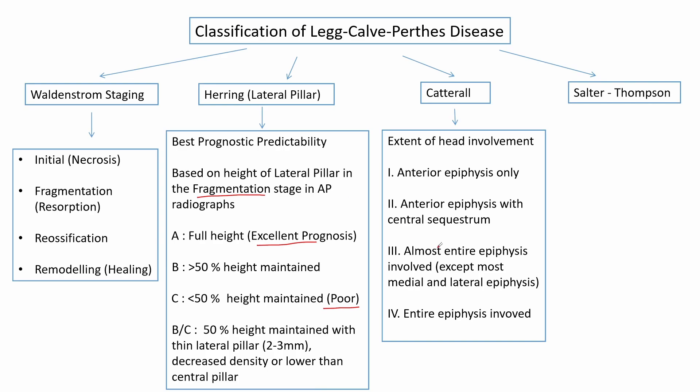In Catterall grade 1, there is excellent prognosis. In grades 3 and 4, there is poor prognosis. Grade 2 has good prognosis if the patient is less than four years old. If the patient is more than four years old, it has generally fair to poor prognosis.